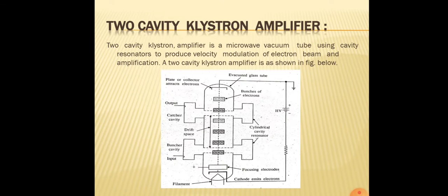The two cavity klystron amplifier consists of an evacuated glass tube. Inside it, at the bottom, there is a cathode, followed by focusing electrodes, then two cylindrical cavity resonators called the buncher, then an output cavity with a small gap, and finally a collector (also called a plate).